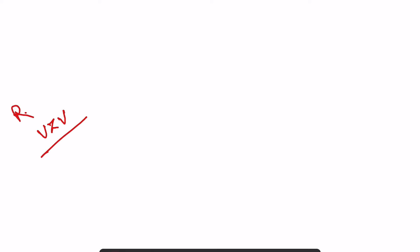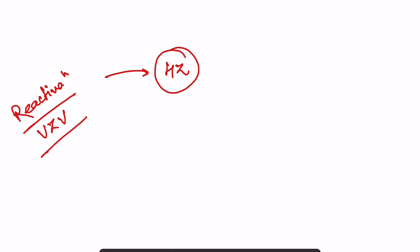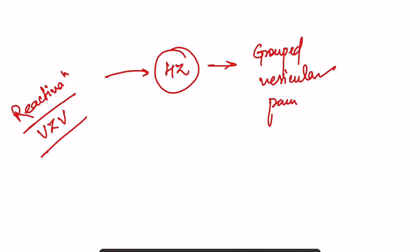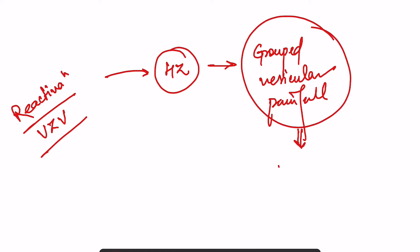The varicella zoster virus may lie dormant in the nerves of the ganglion, and reactivation of this virus leads to herpes zoster. How to identify it: the lesions are grouped, they are vesicular, and they are painful. These grouped painful vesicular lesions occur along a particular dermatome and are unilateral. If you get such a presentation, you are dealing with a case of herpes zoster.